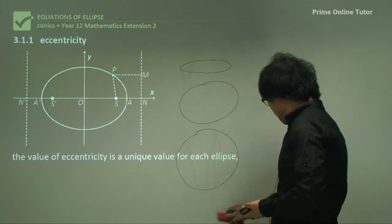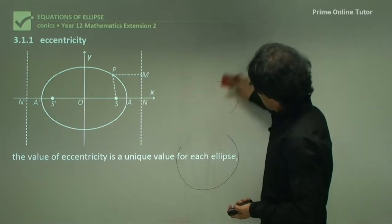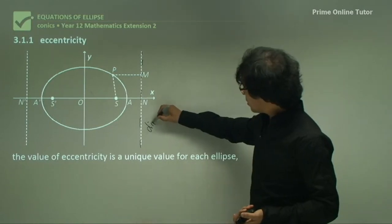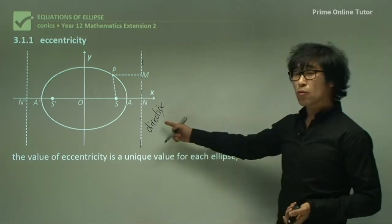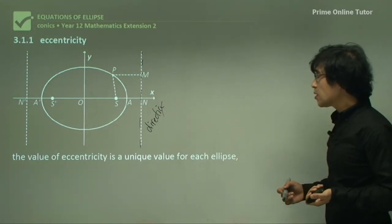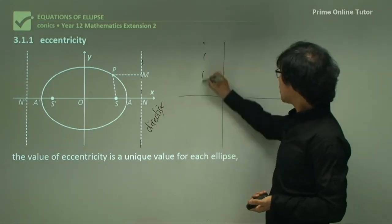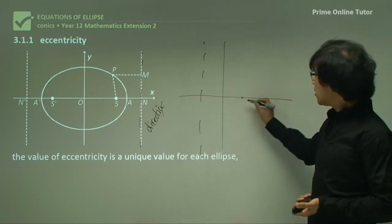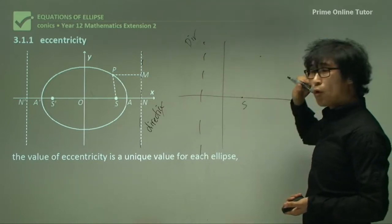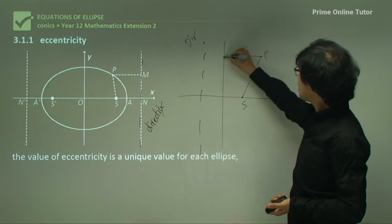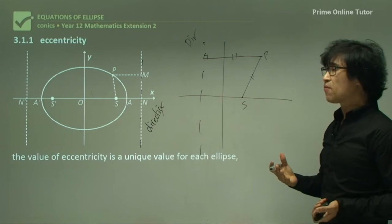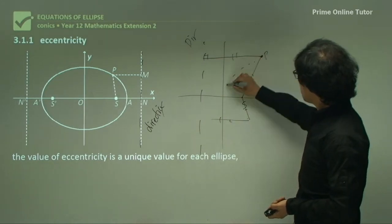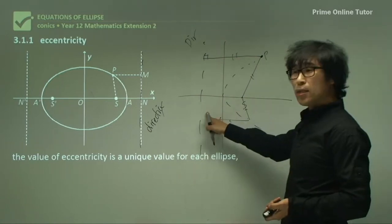In the diagram, the dotted line is called the directrix. You may have heard this word before — it comes from the parabola. The definition of the parabola involves a focus and a directrix, where a point on the parabola is equidistant from the focus and the directrix (perpendicular distance). We apply the same idea here for the ellipse.